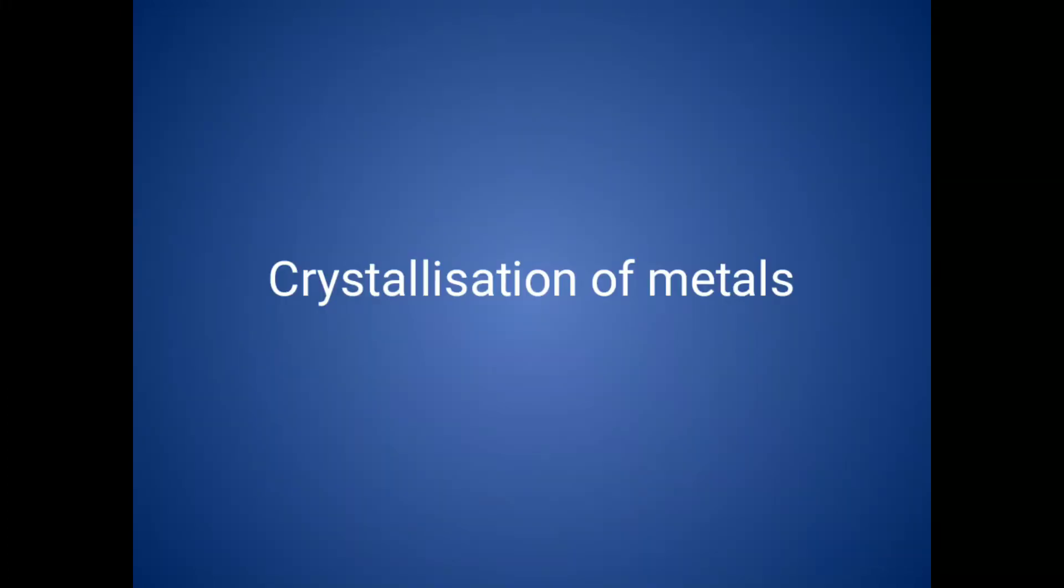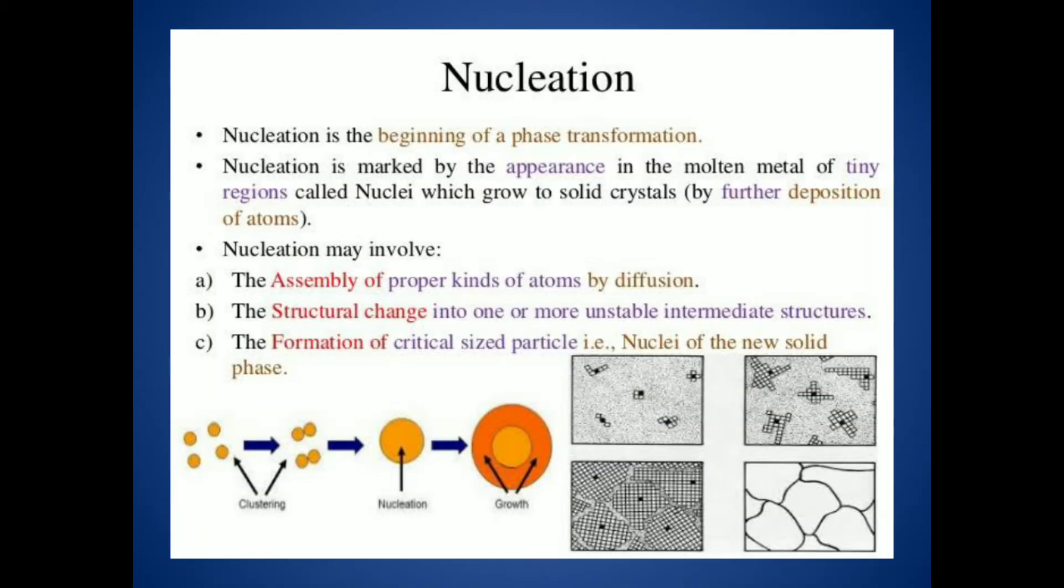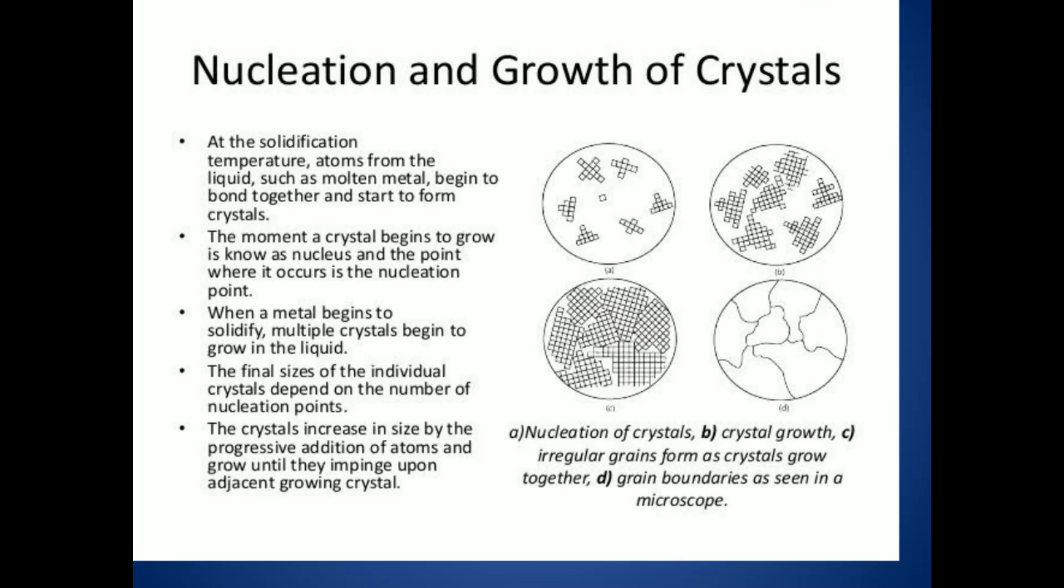Crystallization of metals means we are solidifying the molten metal from liquid state to solid state. It contains two stages: nucleation and growth of crystal. Nucleation means the formation of nuclear points.